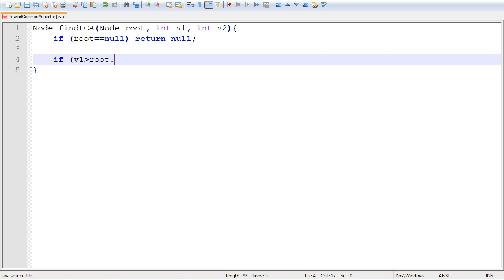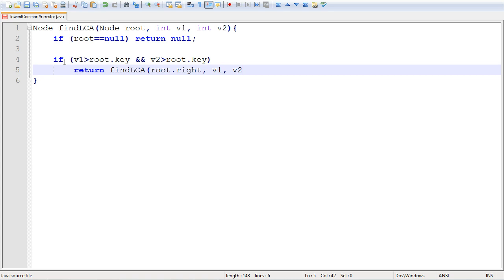So let's do that. If v1 is larger than root.key and v2 is larger than root.key, if they both are larger, then we move to the right. So return find lca call the same function once more, but this time on the right. So root.right v1 v2.